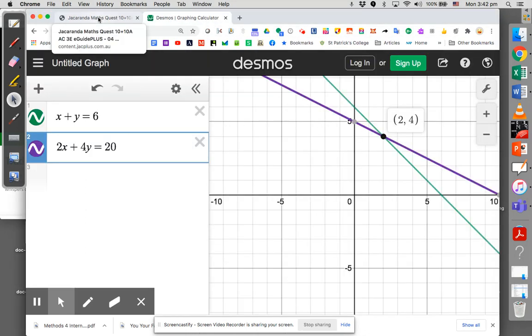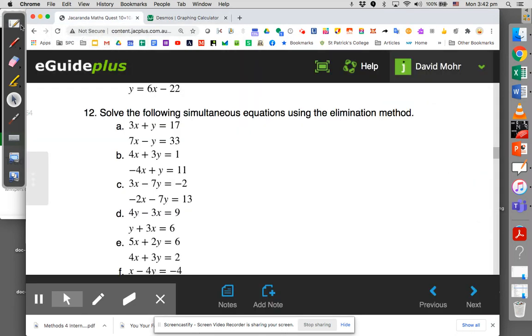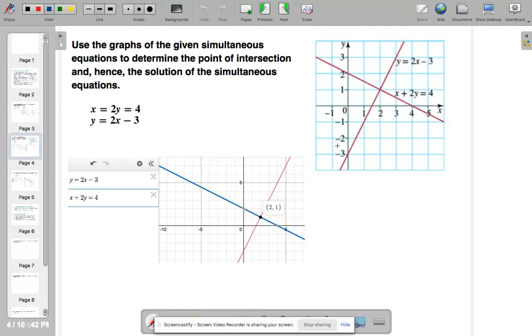but on a thing called the Desmos graphing calculator. And it really is handy in this sort of situation. I just drew up the first equation, y equals 2x minus 3. I drew up the second equation, x plus 2y equals 4. There's a bit of a misprint there. That should be a plus.